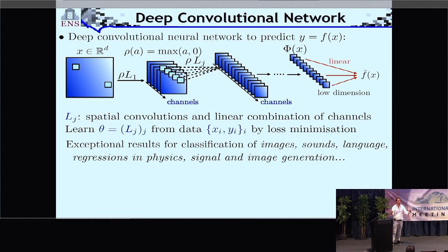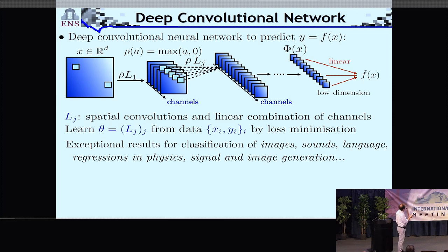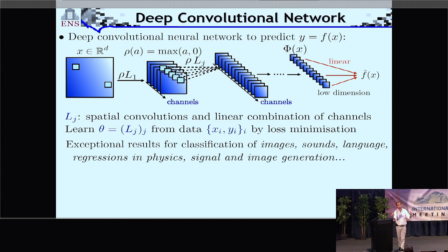You have all these parameters corresponding to the convolution kernels. θ is the set of all parameters within the network, and the number of parameters can grow up to billions. You optimize these parameters so that the output function is as close as possible to the ideal function, testing on examples where you do know the value y, and you establish a metric of error — the loss function.